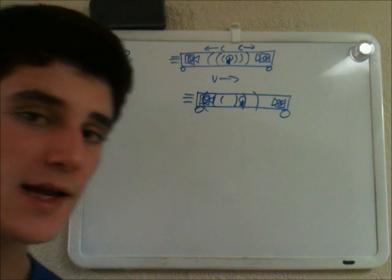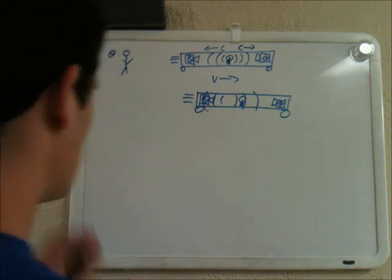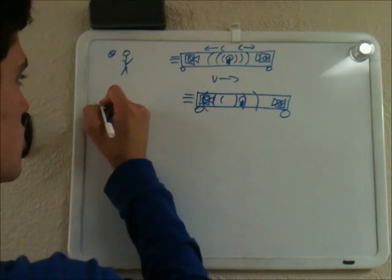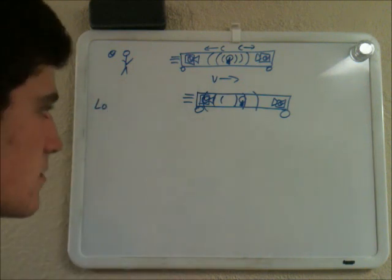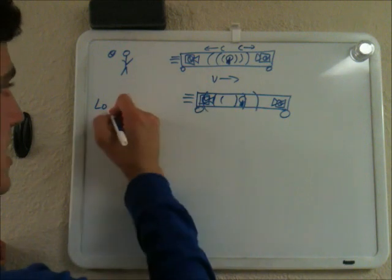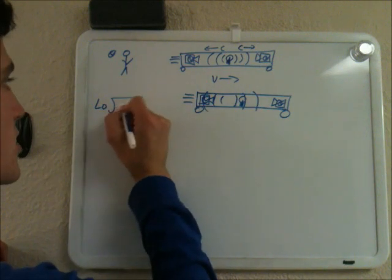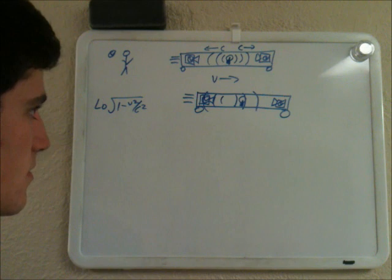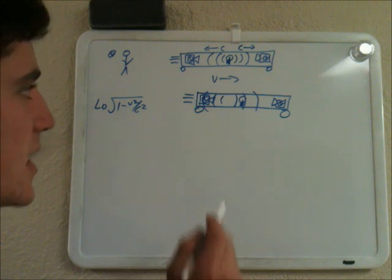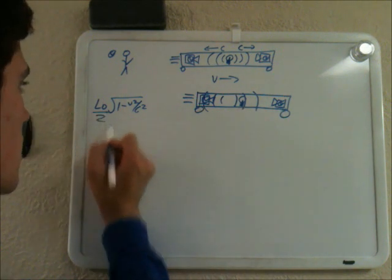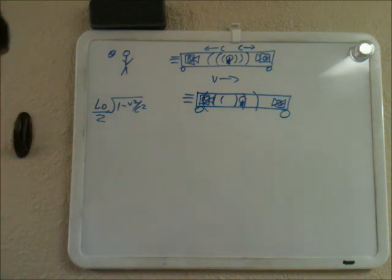And we can calculate this mathematically. We say that the length of this train is L0, and the length that this outside person sees the train to be is L0 times the square root of 1 minus v squared over c squared — that's length contraction. The distance from each clock to the light in the middle is L0 over 2 times the square root of 1 minus v squared over c squared.